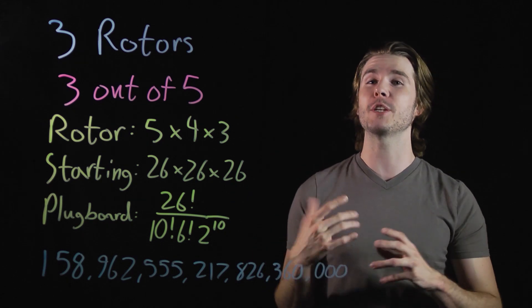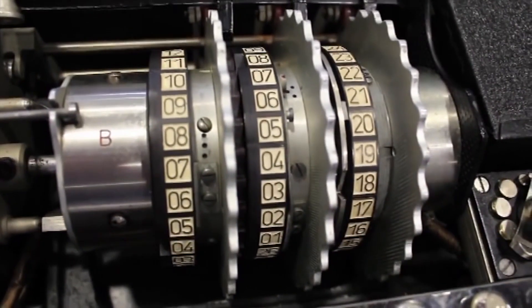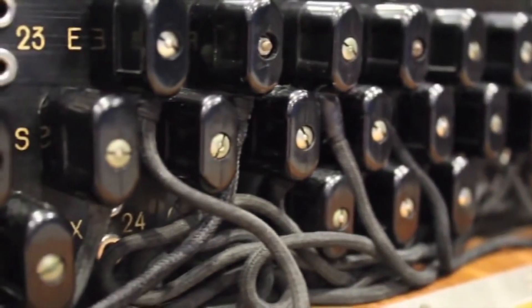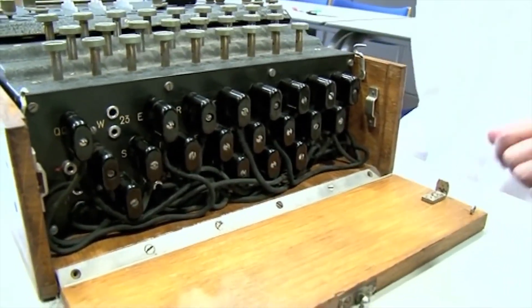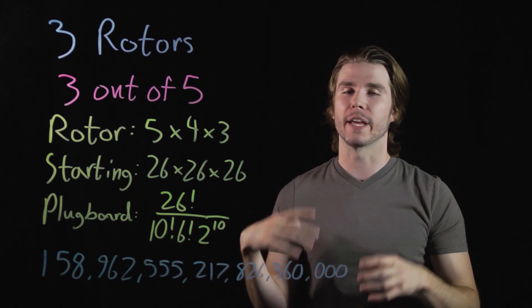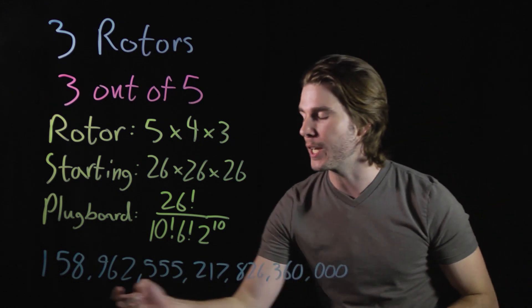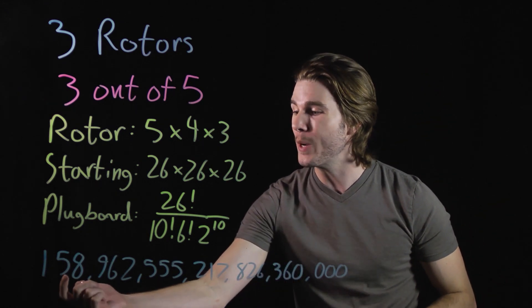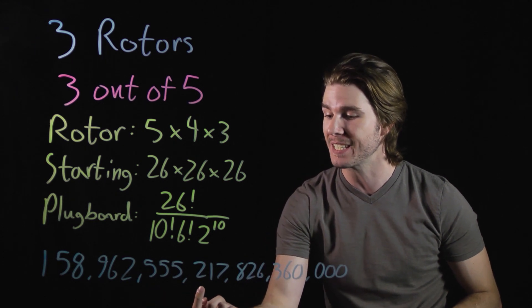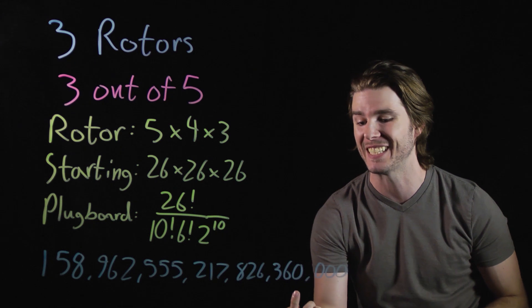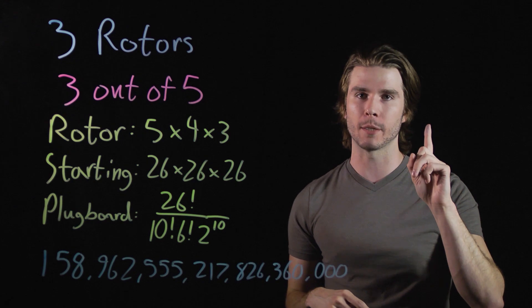Then you have the possible combinations of starting settings for each rotor. One for each letter, which is 26 times 26 times 26. And then you have what's called a plug board at the front of the Enigma machine, which basically just links pairs of letters together to switch them. Now according to this equation, that is a gigantic number. You add all of these possible combinations up, and you get 158,962,555,217,826,360,000 different possible combinations for just one Enigma machine.